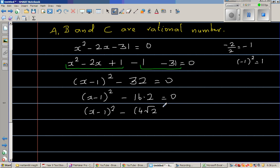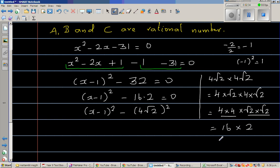So what happens now? So this is x minus 1 the whole squared minus 16 times 2 is same as 4 root 2 the whole squared. So let me explain that. So 4 root 2 times 4 root 2 is 4 times root 2 times root 2, which is 4 times 4 times root 2 times root 2. So this is 16 times, and this is root 2 times root 2 is 2. So this is nothing but 32.